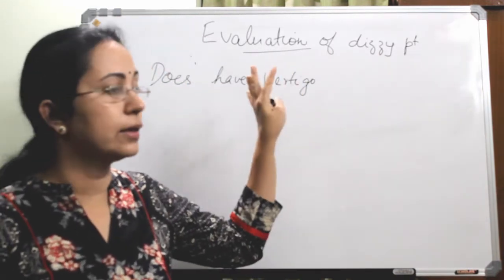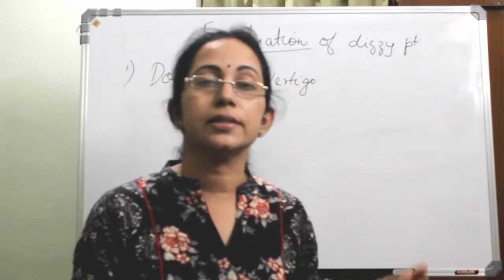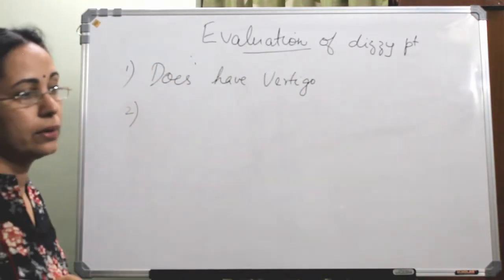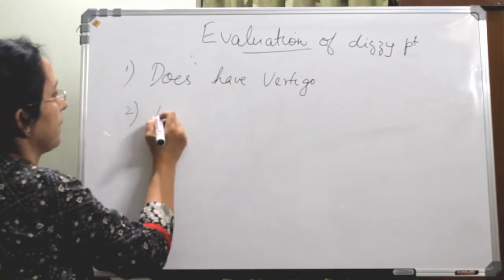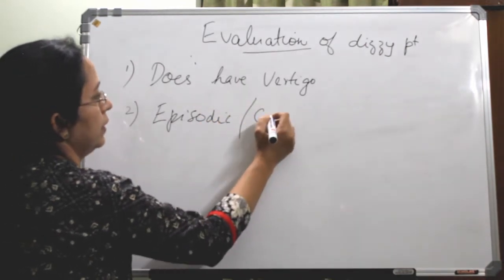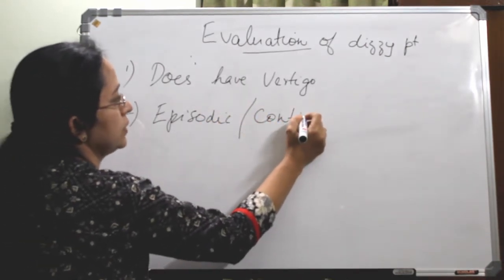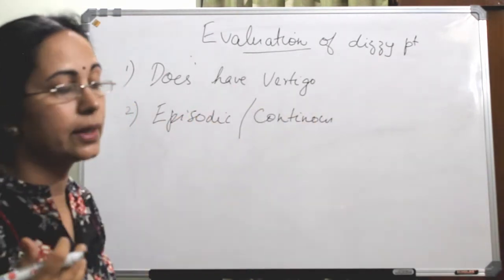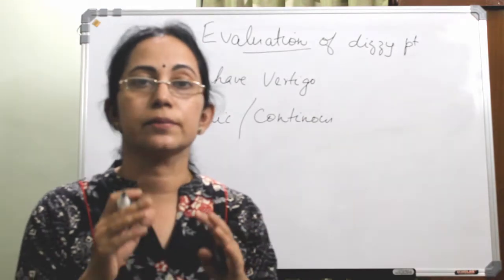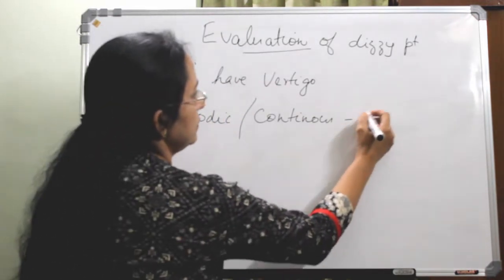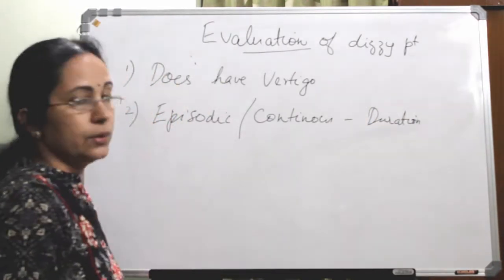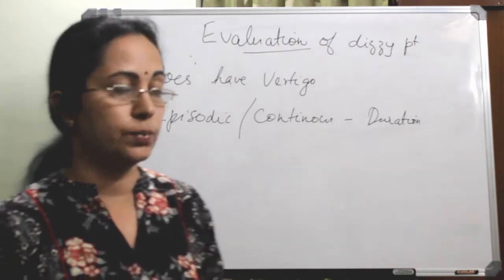And if the patient is having a true vertigo, ask whether this symptom is episodic or continuous — intermittent or continuous. Whether it is happening all the time or coming and going intermittently. And also ask the duration of each attack.